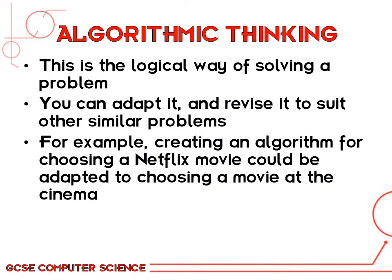Finally, we have something called algorithmic thinking. This is the logical way of solving a problem — going through a series of processes in a nice logical structured order to solve a particular problem. The best thing about this is you can adapt, change, or revise it to suit other similar problems. In programming, you might have one particular solution that you could then use again for a different program. Using our Netflix example, you'd create an algorithm for how to choose a particular Netflix film, and then you could use that again when you go to the cinema, because it's a very similar set of choices.